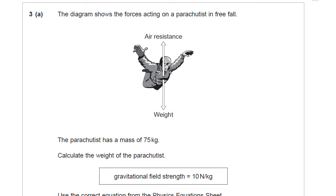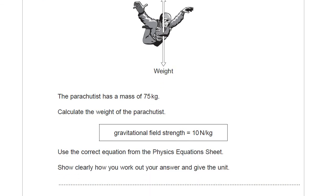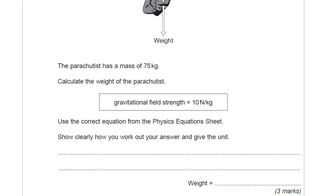Terminal velocity is all about a balance of two forces. The two forces when you're falling are weight and air resistance. These are the only two forces acting on a parachutist in free fall, which means he's just falling without anything else attached to him. His mass is 75 kilograms, so we know his mass. You're asked to calculate the weight of the parachutist, and you're told the gravitational field strength is 10 newtons per kilogram. So the first question just gives you some data and asks you to use the correct equation from the physics equation sheet. Show clearly how you work your answer and give a unit.